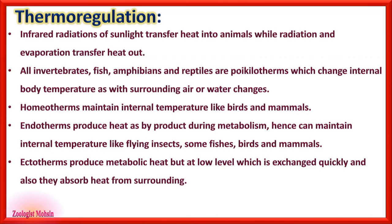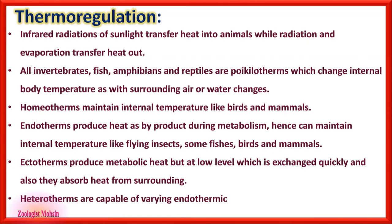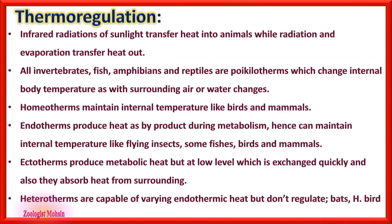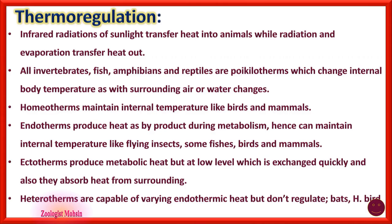Ectotherms also produce metabolic heat but at a low level, which is quickly exchanged and sent outside, and they absorb heat from surrounding environment. Heterotherms are capable of varying endothermic heat production but do not regulate it — examples are bats and hummingbirds.